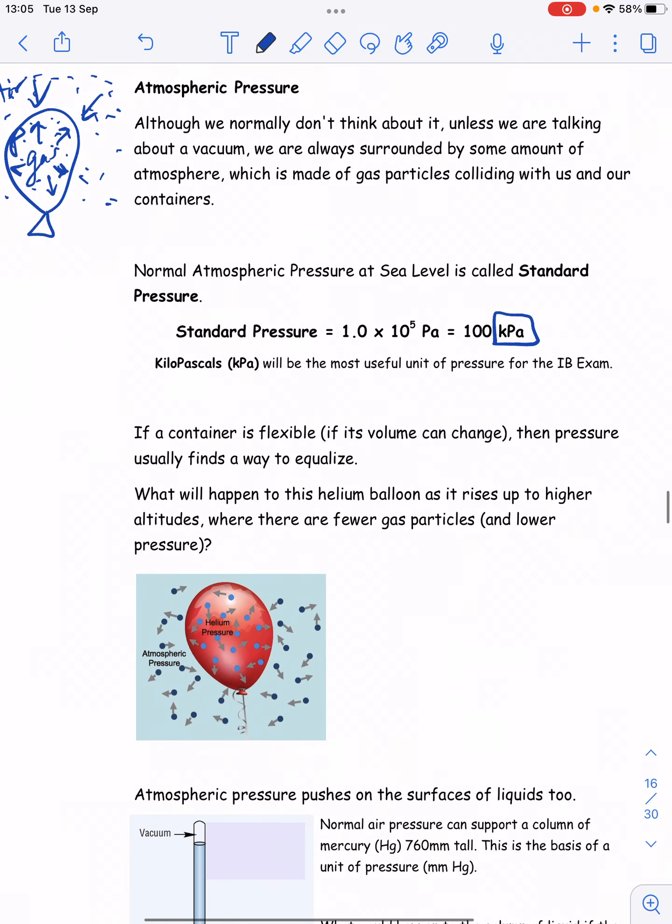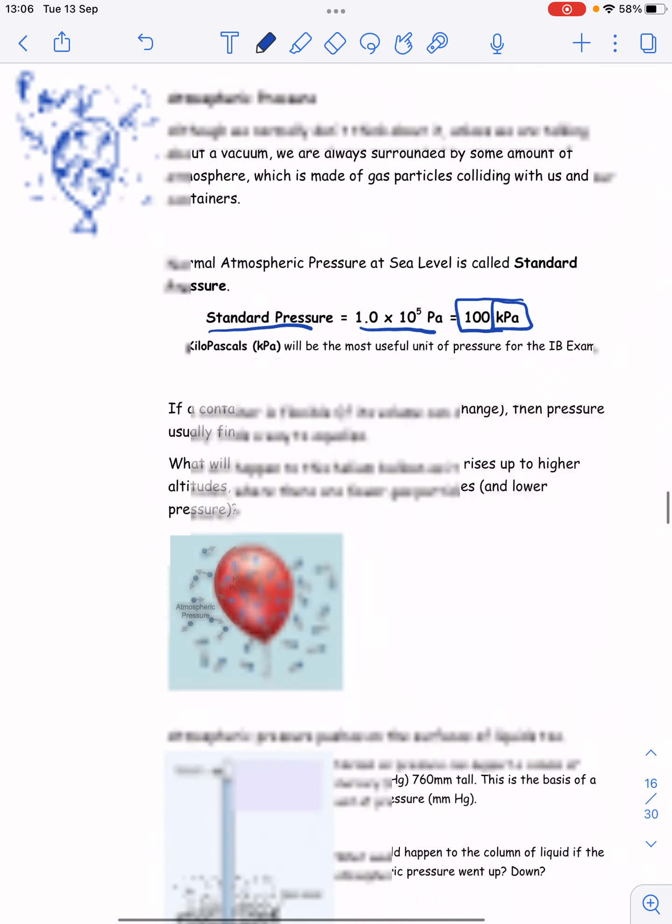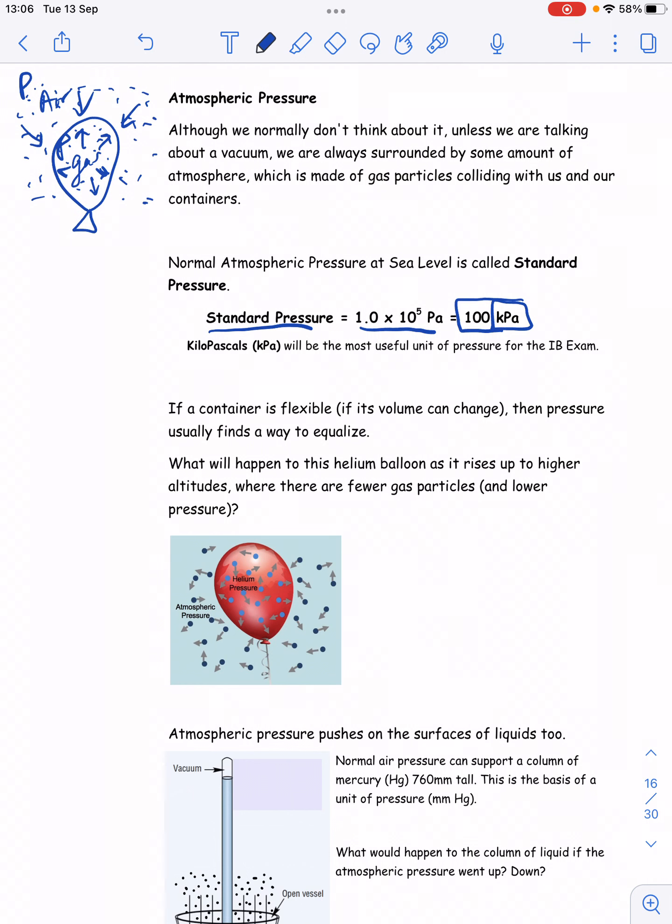Now, atmospheric pressure, the standard, what's called standard pressure, is 100,000 pascals, 1 times 10 to the 5th pascals. However, that's kind of a big number for our standard value. So we tend to use kilopascals. And so 100 kilopascals is standard pressure. Normal atmospheric pressure is more or less 100 kilopascals.